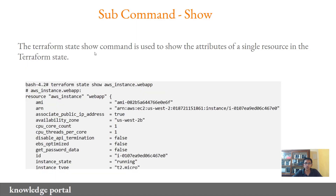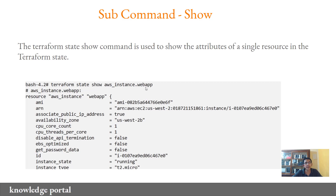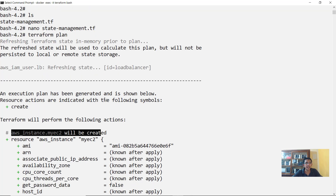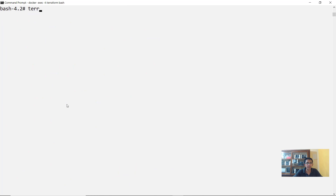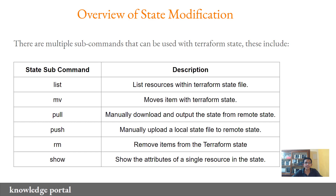The last subcommand is Terraform state show. This command is used to show the attributes of a single resource in a Terraform state. A single state can have multiple resources, so if you want to see the attributes and associated values of one specific resource, you run Terraform state show followed by the resource name. Since the EC2 instance is not in the state file, running Terraform state show aws_iam_user.lb will display only the details associated with the IAM user.